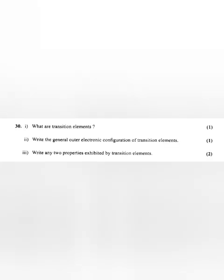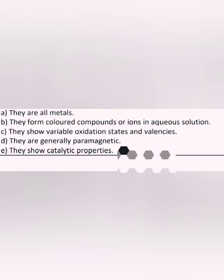Write any two properties exhibited by transition elements. Answer: They are all metals. They form colored compounds or ions in aqueous solution. They show variable oxidation states and valencies.